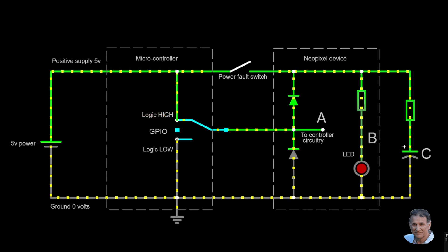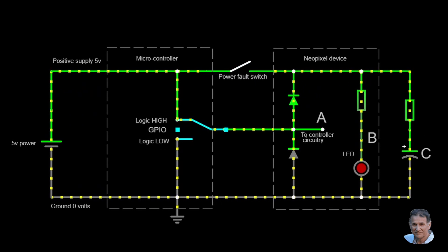But look what happens when the GPIO changes rapidly. The current through the LED keeps on going. So, that's what was happening with my NeoPixel ring. Phantom power.